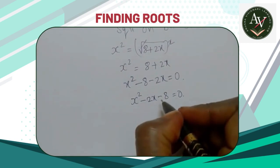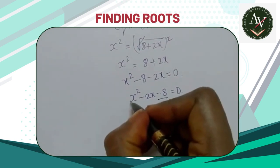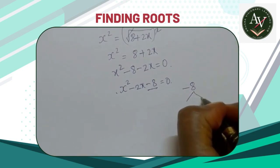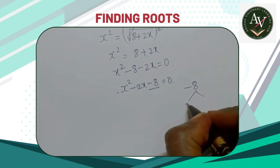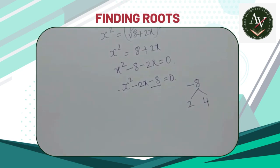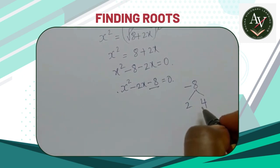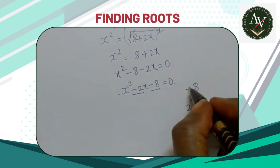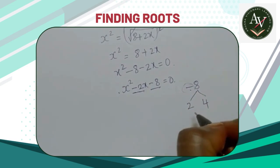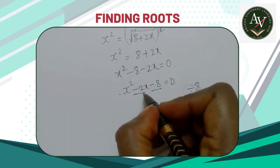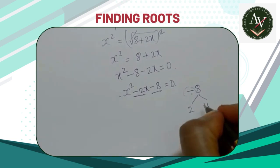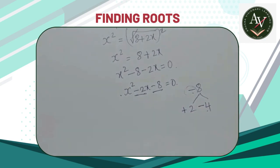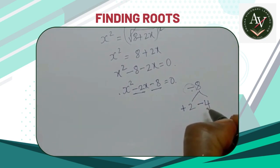Now check the factors for -8. What are the factors for 8? 2×4 and 4×2. We should get the difference of the two numbers as -2, so we keep the minus symbol for the bigger one and plus symbol for the smaller one.